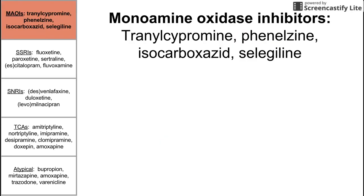Let's start with the MAO inhibitors — the monoamine oxidase inhibitors. These are tranylcypramine, phenelzine, isocarboxazid, and selegiline. These are the four monoamine oxidase inhibitors.